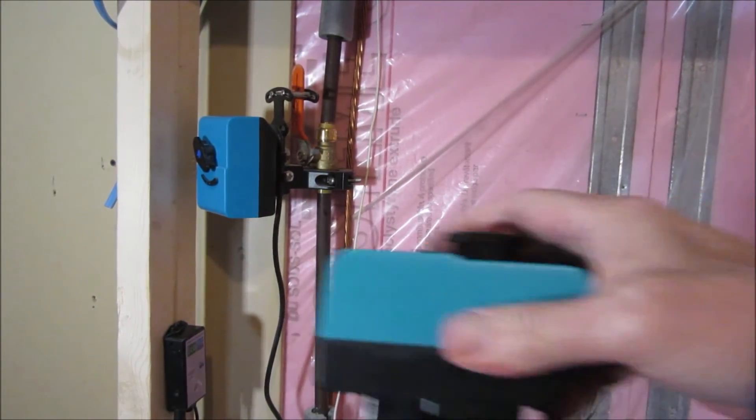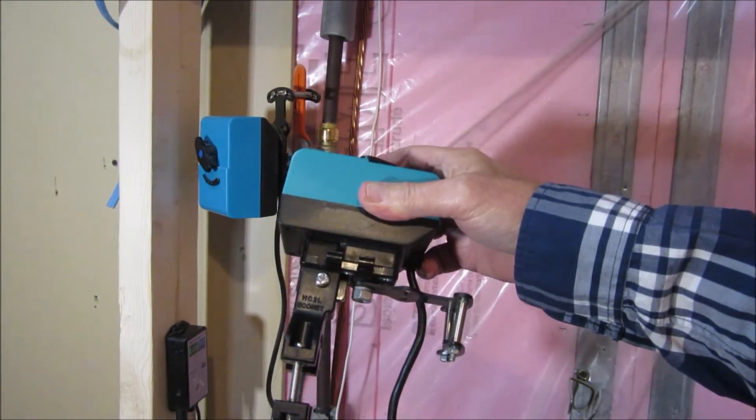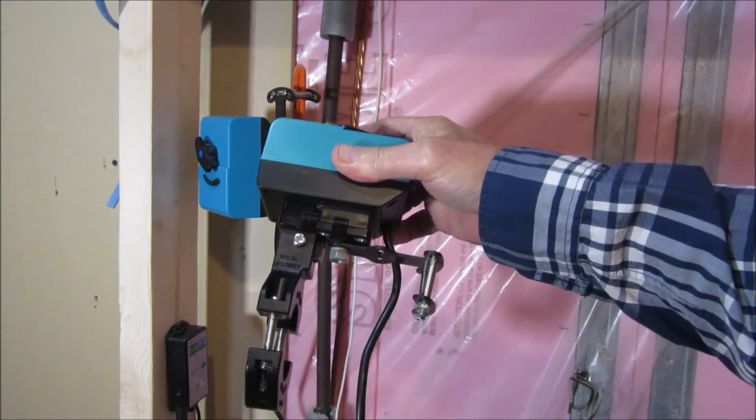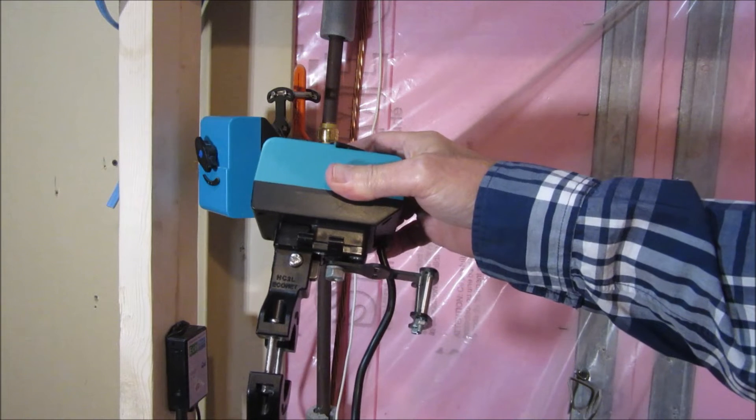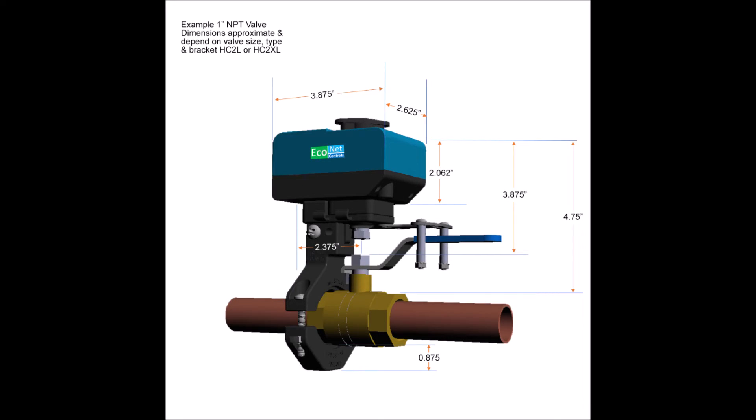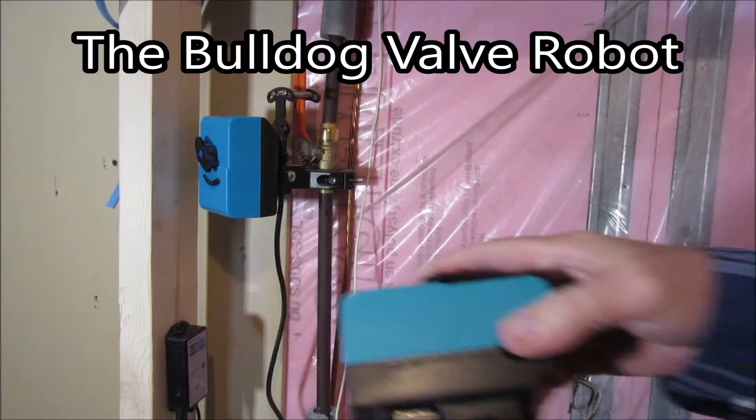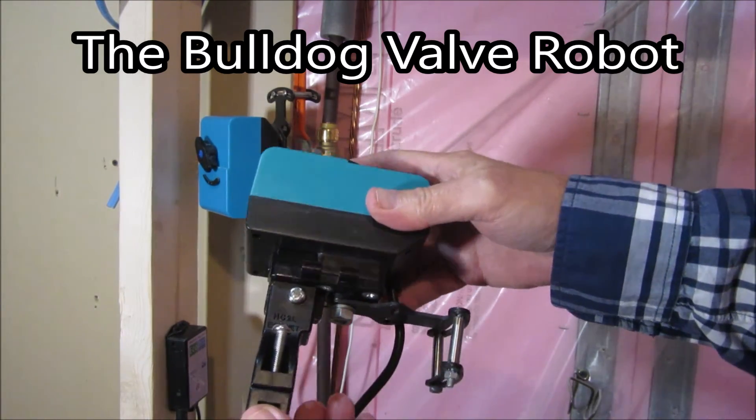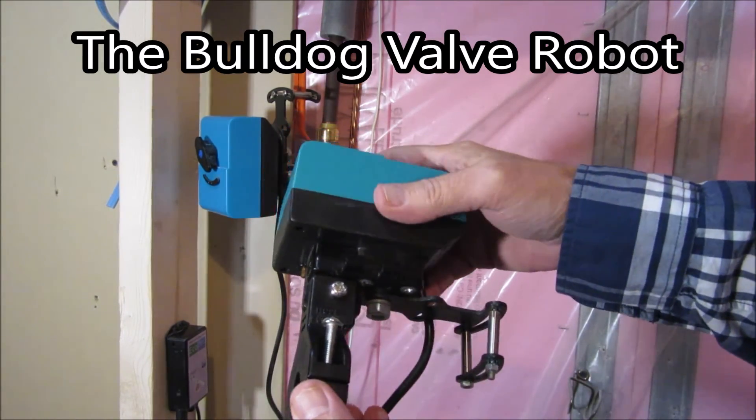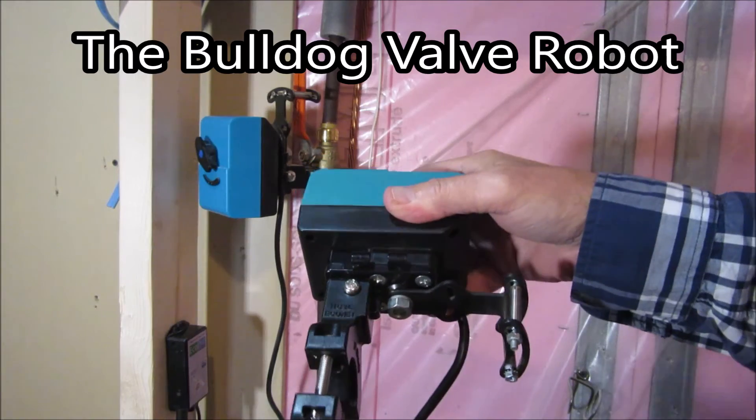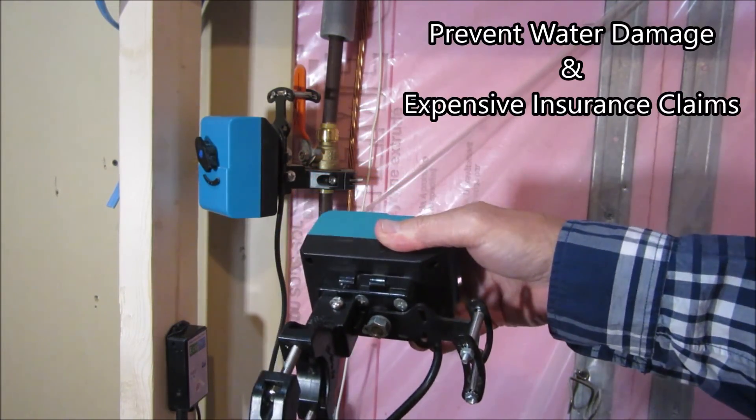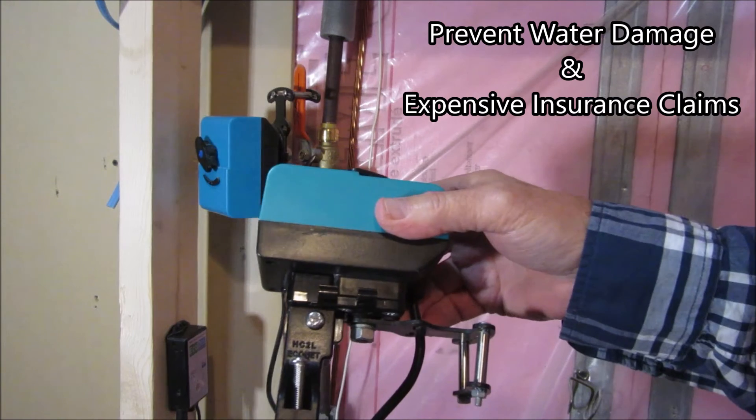Once you've determined the valve size, it's a good idea just to take a look around the valve to see if there's enough space to mount this around the valve. We have dimensions posted so that can give you a better idea, but we also have alternate mounting kits as well for valves that are too close to a wall or any obstruction.